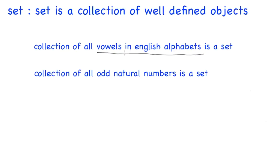Do you know what the vowels in the English alphabet are? Yes, vowels in the English alphabet are well-defined. Those vowels are: a, e, i, o, u. So the collection of vowels in the English alphabet is well-defined, and therefore this collection is a set.